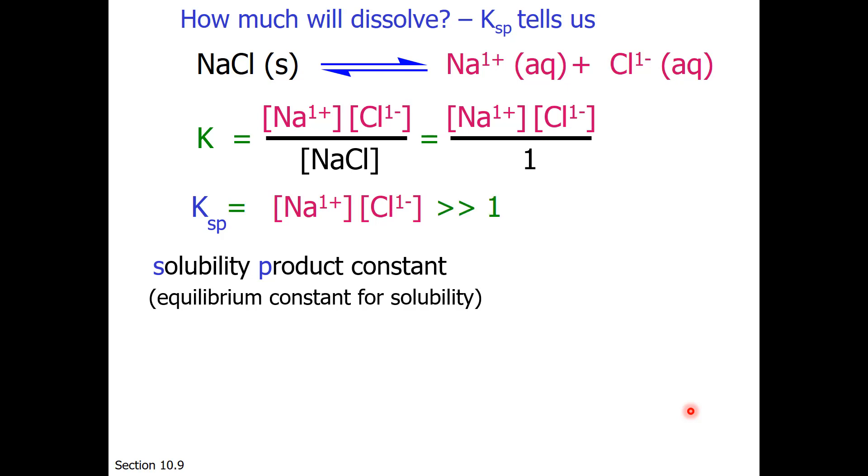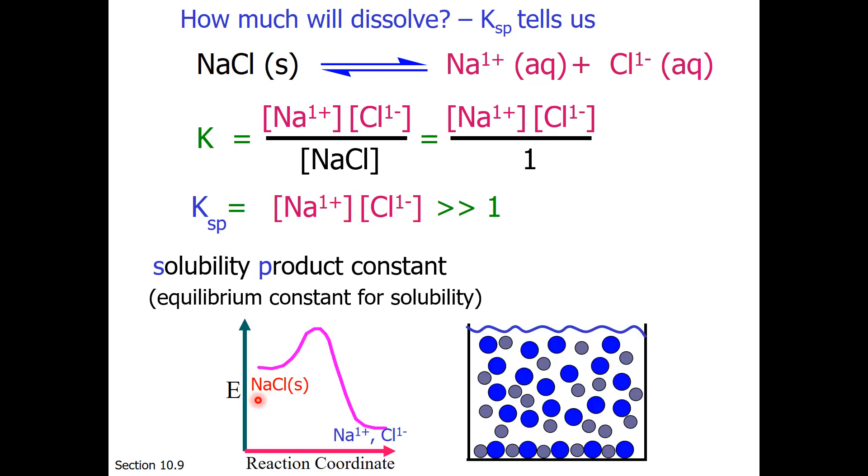Ksp for sodium chloride is a very large value. Remember that when you have a large value for K, products are preferred. So this is an extensive reaction, and if we put a lot of sodium chloride in water, we would find many ions dissolve, and only a little bit of sodium chloride remaining at the bottom. Ksps that are greater than 1 mean a lot of product, meaning sodium chloride solid dissolves extensively in water to make sodium plus and chloride 1 minus ions.